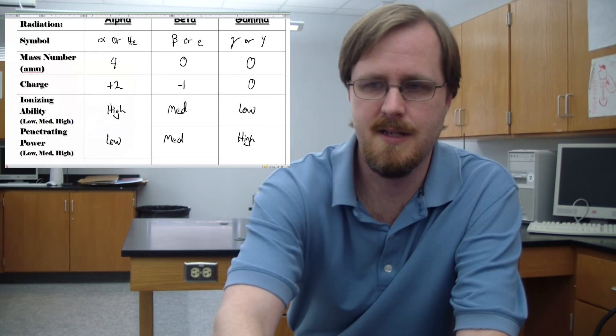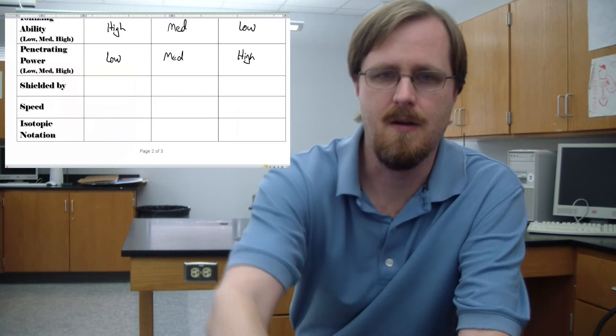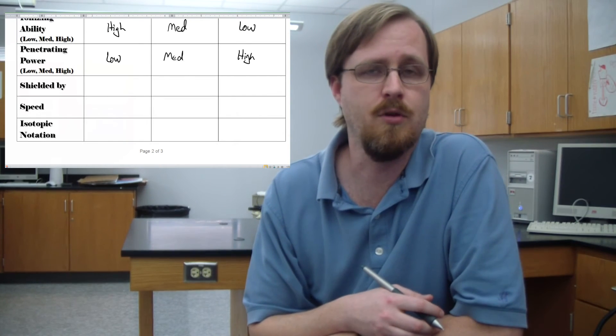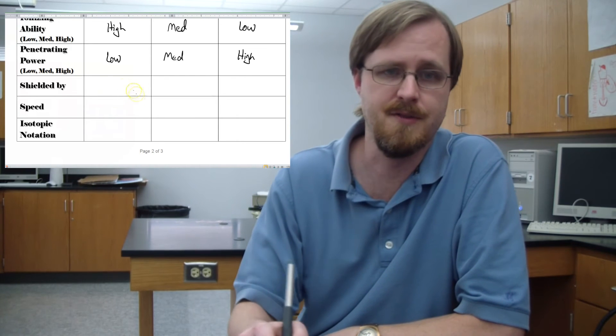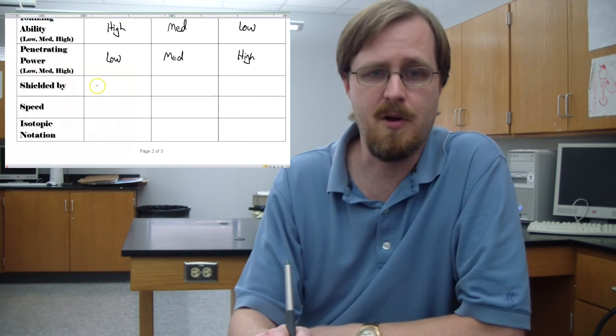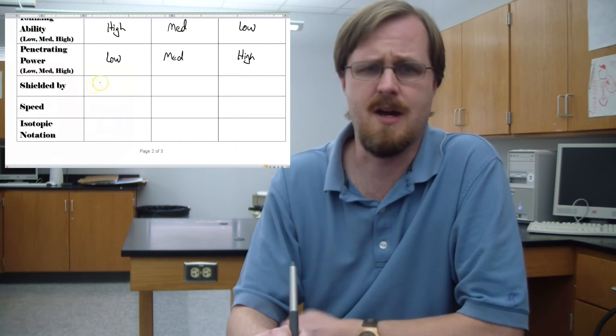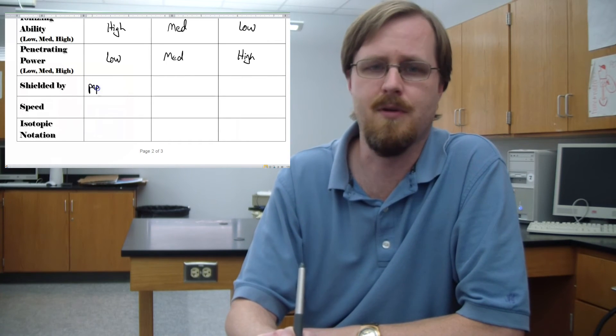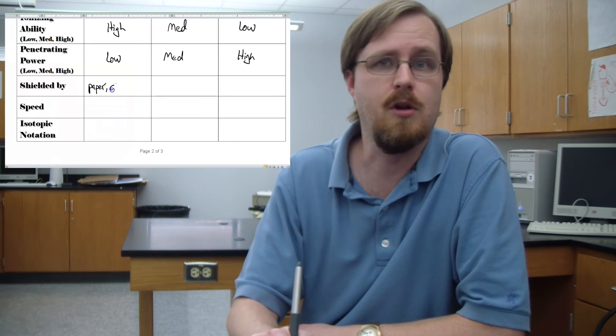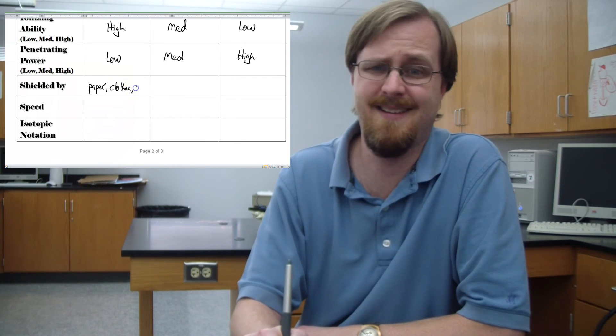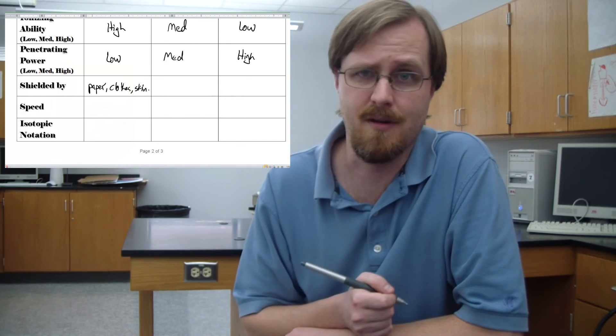So now we need to talk about what we need in order to protect ourselves from each of these particles. So alpha particles, being rather large, doesn't take much to stop them. Just a piece of paper is really all we need. Your clothes are able to stop alpha particles. And actually even your skin can stop those particles.